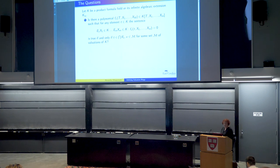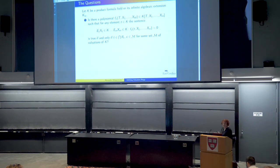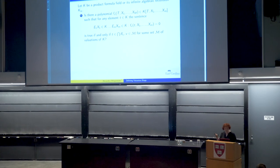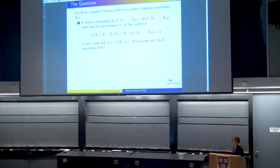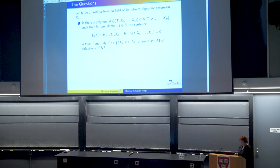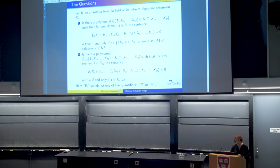So what's the problem? Let k be a product formula field or its infinite algebraic extension k_infinity. For the product formula field itself, we look for a polynomial f_v with m variables and a parameter t, such that a sentence with quantifiers e_i — either for every or there exists — is true if and only if t belongs to some intersection of valuation rings. We also look at defining the integral closure of valuation rings in an infinite algebraic extension.